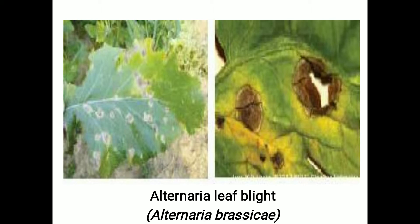Hello everyone, today we are here to discuss the diseases of mustard crop. We will discuss the different kinds of diseases that cause severe losses in yield. The first disease is called Alternaria leaf blight or leaf spot, and the causal organism is Alternaria brassicola or A. brassicae — a fungal disease.